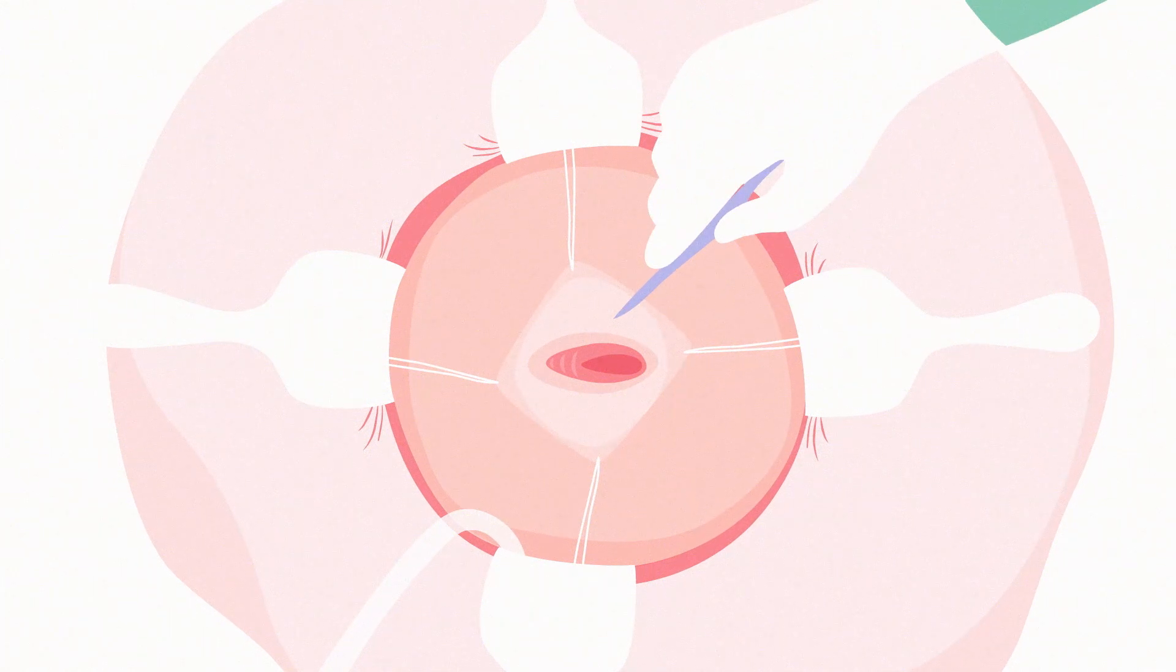The neurosurgeon then cuts around the exposed spinal cord which is protruding through a hole in the back of the fetus.